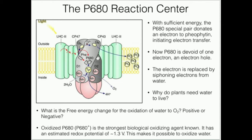The P680 special pair gives up an electron, and therefore P680 has what we refer to as an electron hole. An electron hole is simply an oxidized form of a molecule. If a molecule gives an electron up, its charge goes up by one — it becomes more positive. The electron acceptor now has a charge that goes down by one. P680 went up by one in charge, and the acceptor went down by one — this is what we refer to as separation of charge. P680 now has a positive charge, or at least is one more positive than it was.